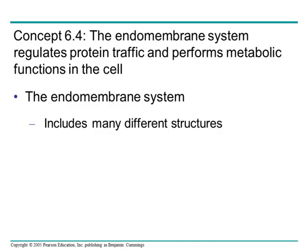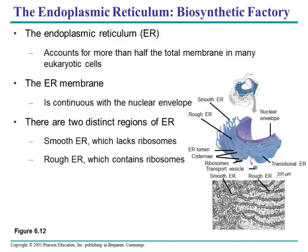Concept 6.4: the endomembrane system. The ER includes smooth ER, which is smooth because it lacks ribosomes, and rough ER, which contains ribosomes. It's always right next to the nuclear membrane because it has to receive the messenger RNA to continue the production of proteins from those ribosomes attached to the rough ER.